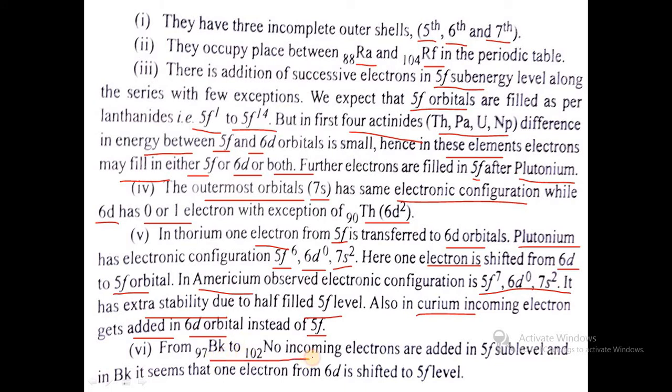From berkelium to nobelium, incoming electrons are continuously added into the 5f sub-energy level. In berkelium, it seems that one electron from 6d shifted to 5f level. These are the cases studied for electronic configuration of actinides.